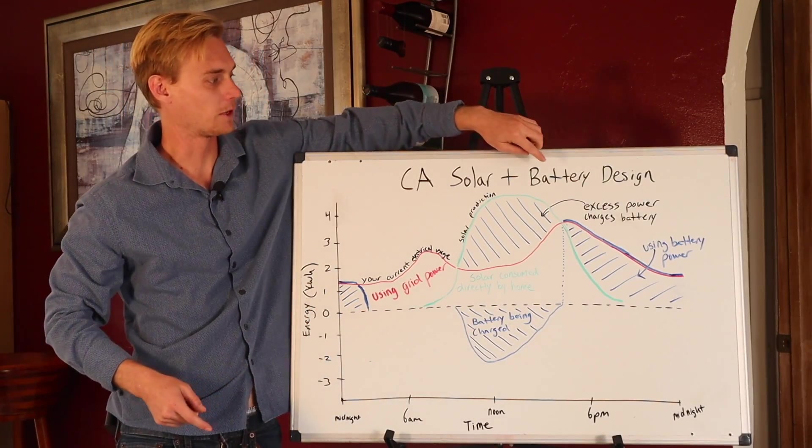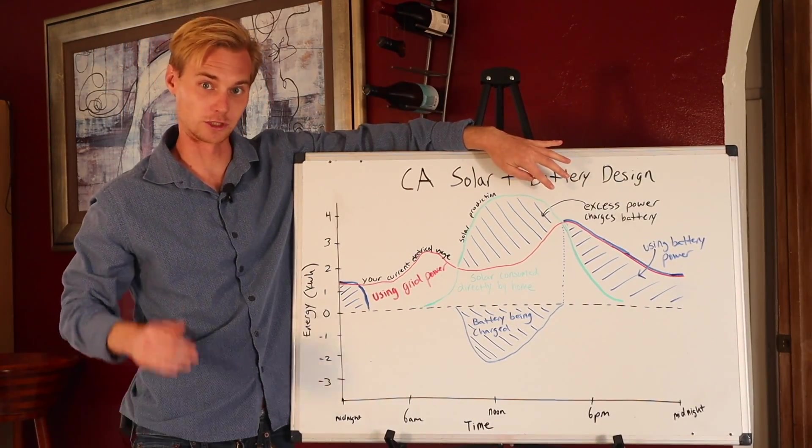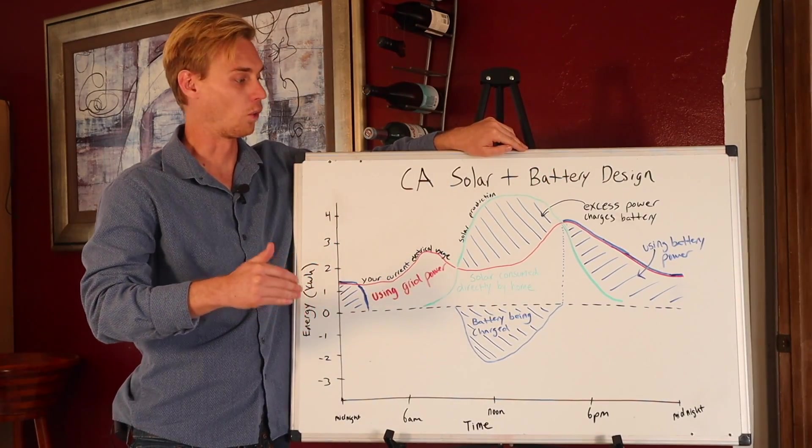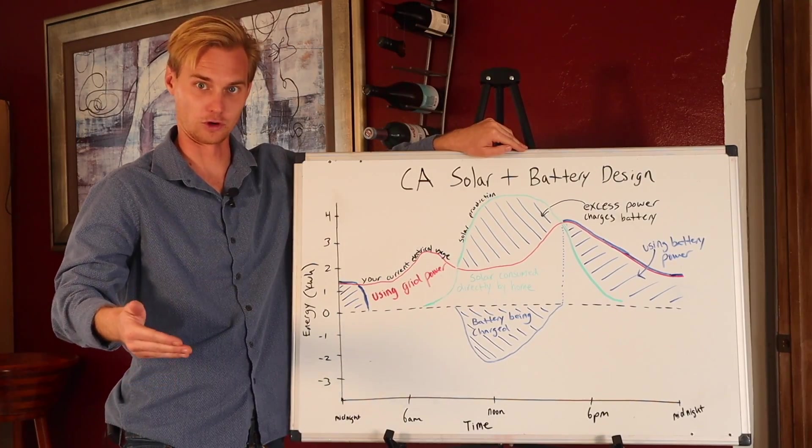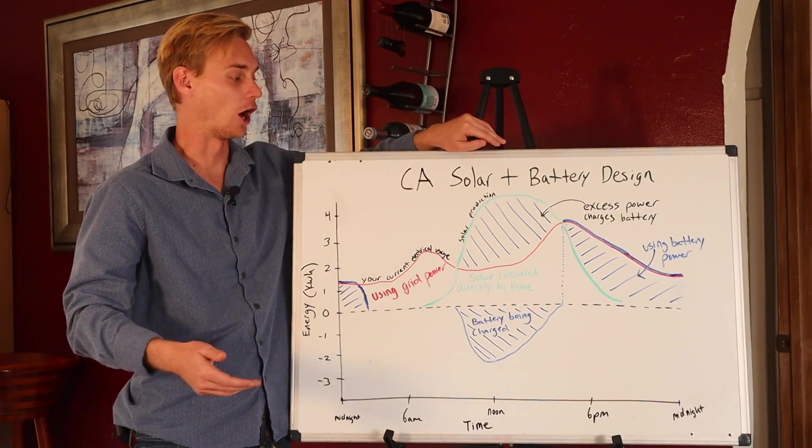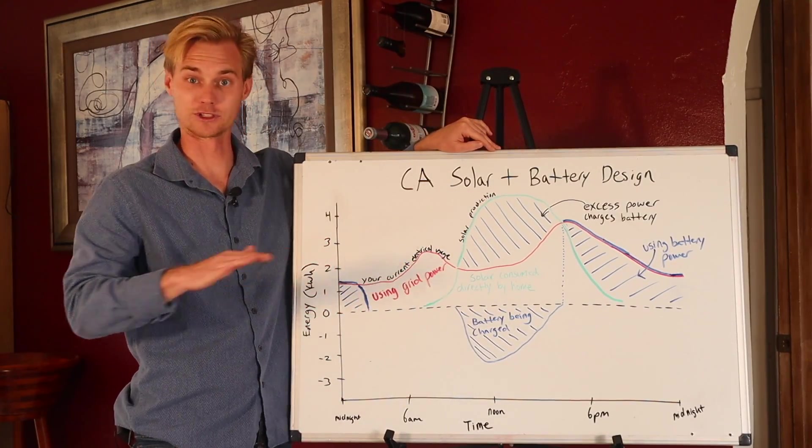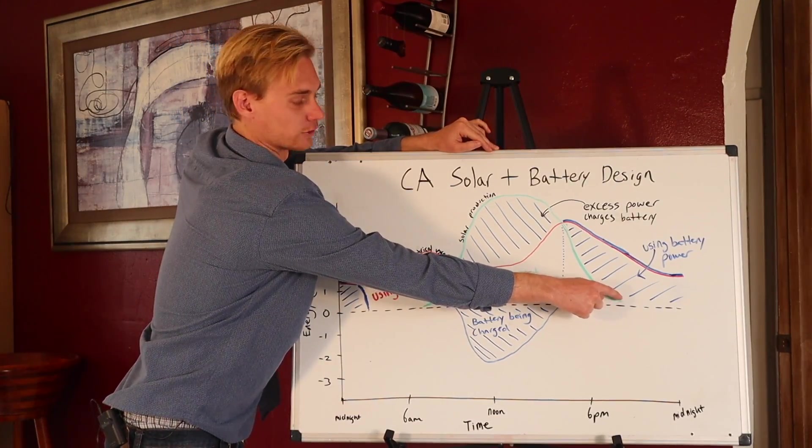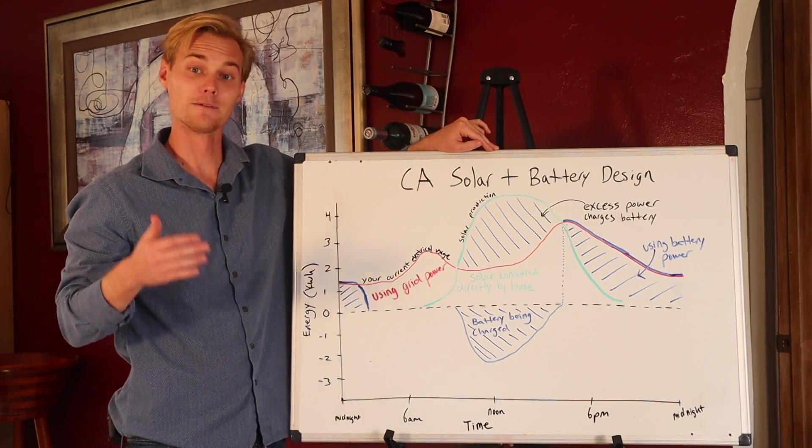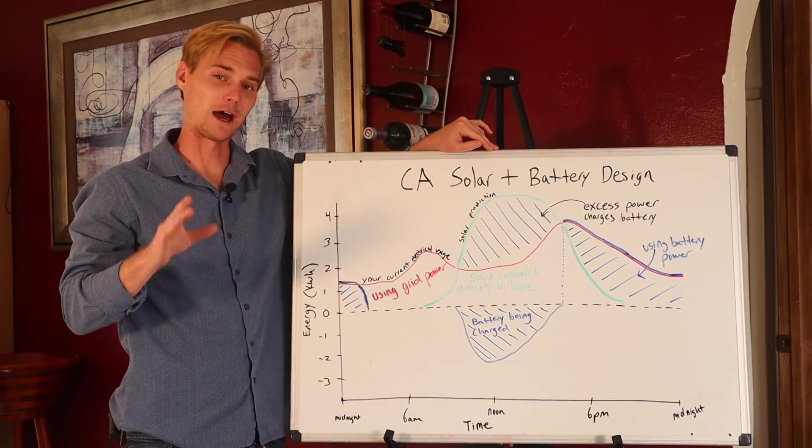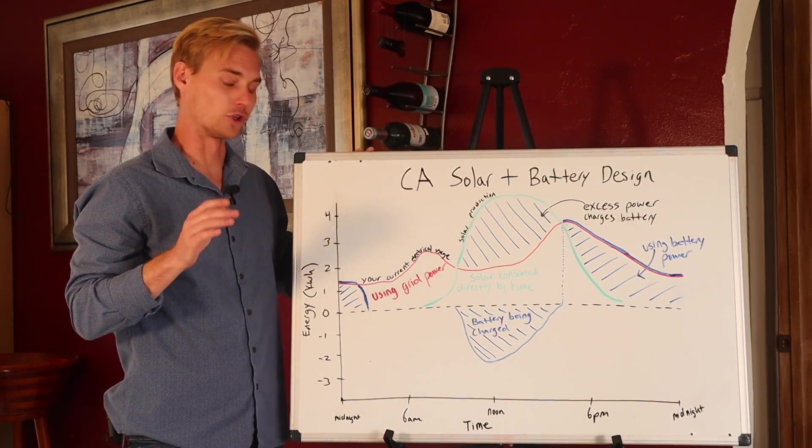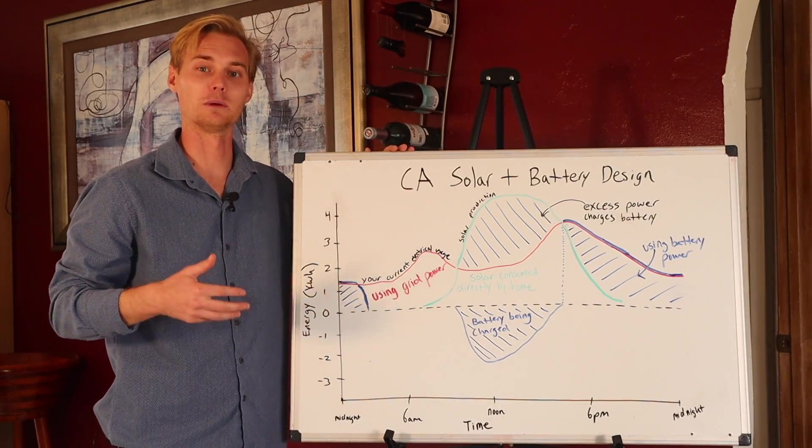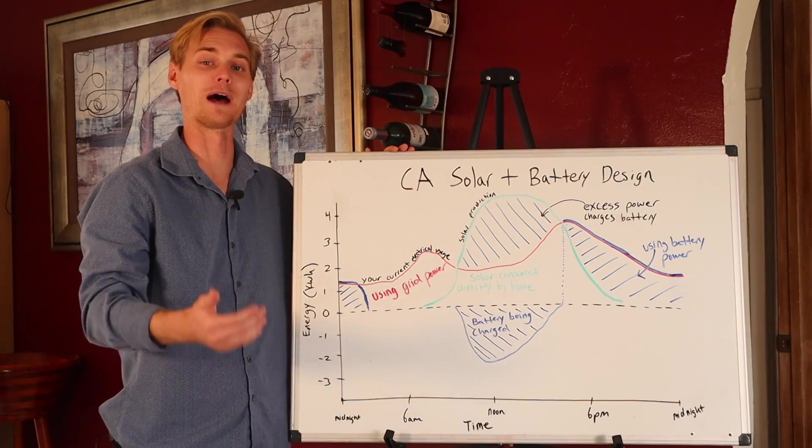And then in the evening time, as the solar production dips below what the home needs, the battery will then supplement what the solar is giving the home to power the house up until the point when the sun totally sets. And now, like right here, for example, you're completely using the battery. Now, the amount of batteries you have is going to determine how late through the night you're actually going to be able to use your batteries before you're back on the grid power.